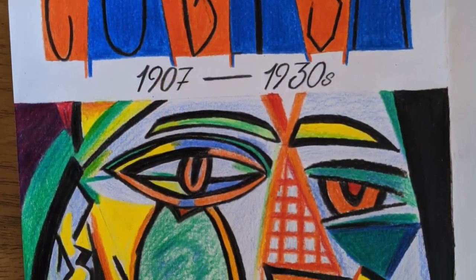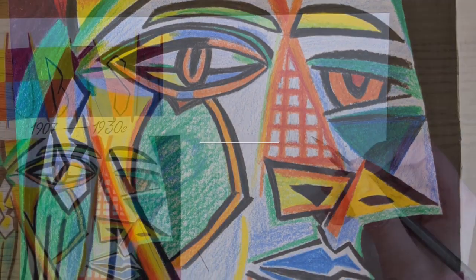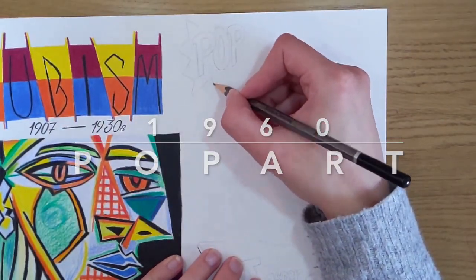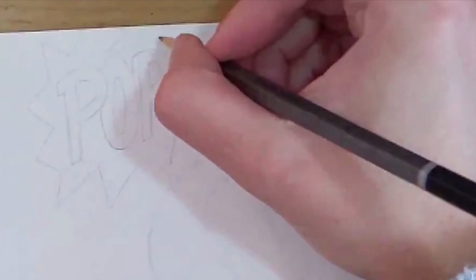Once you've finished your title, date and picture you're finished. Now we're on to 1960 which is pop art and the last page of your book.